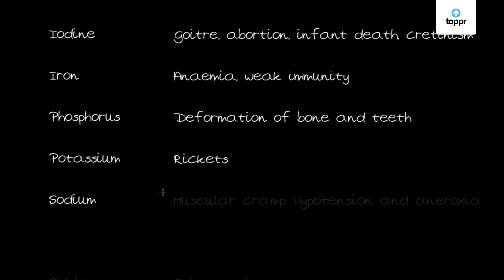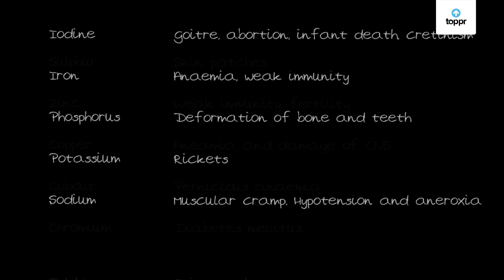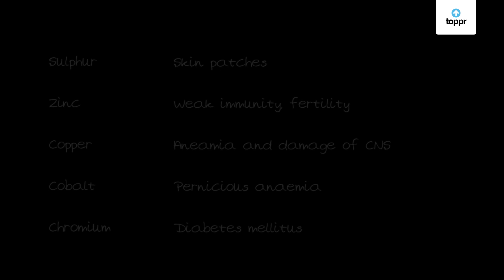Next is sodium. Sodium is the principal cation in the interstitial fluid, similar to chlorine. It maintains fluid balance and is responsible for the conduction of nerve impulses. The deficiency of sodium causes muscular cramps, hypotension, and anorexia.